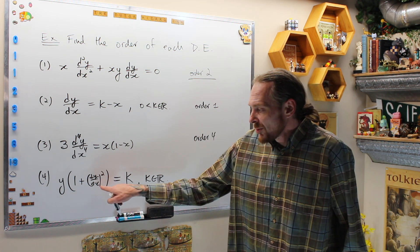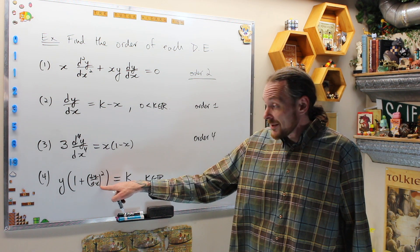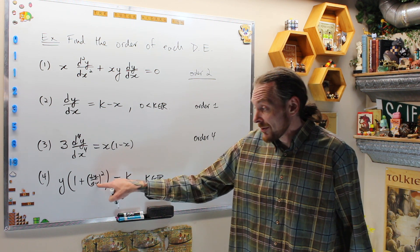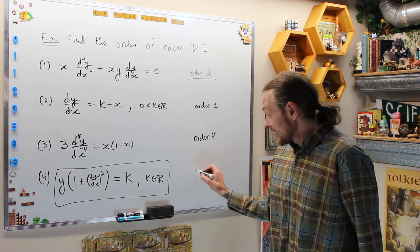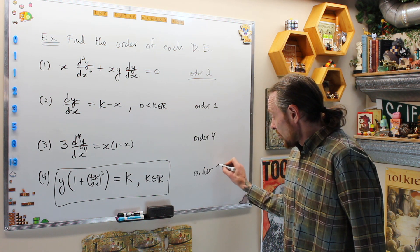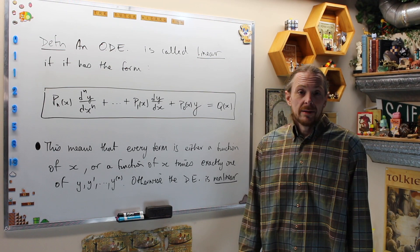This one's a little bit trickier. This one isn't the second derivative. What this one is, is a first derivative squared. So be careful with this one. This is order 1.